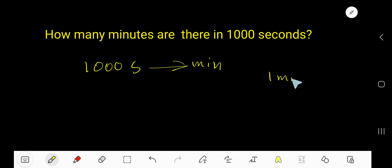We know that 1 minute equals 60 seconds. Let me rewrite this given information, 1000 seconds, as a fraction like this.